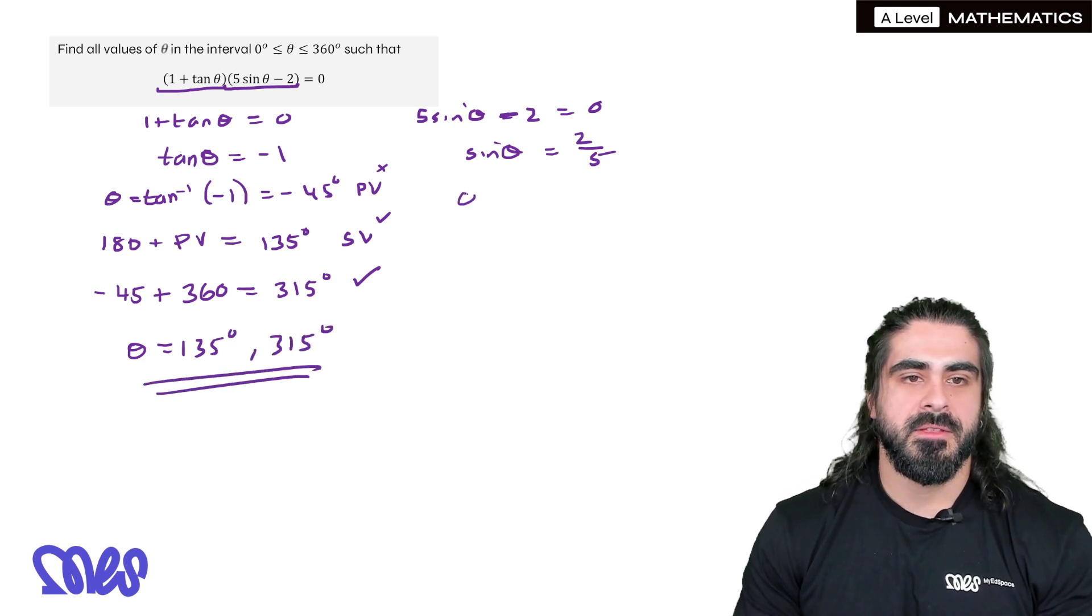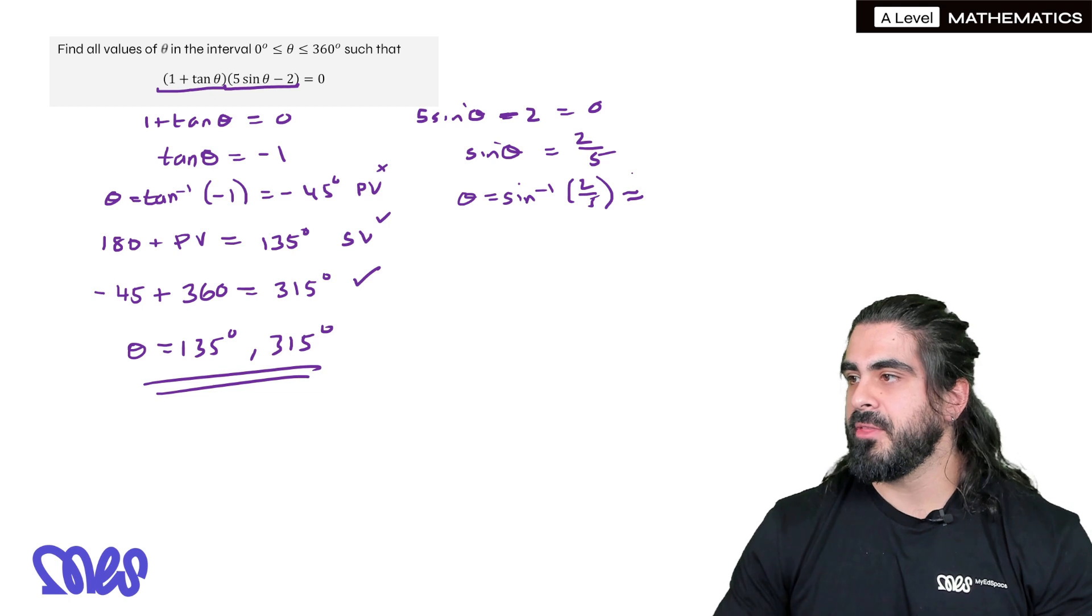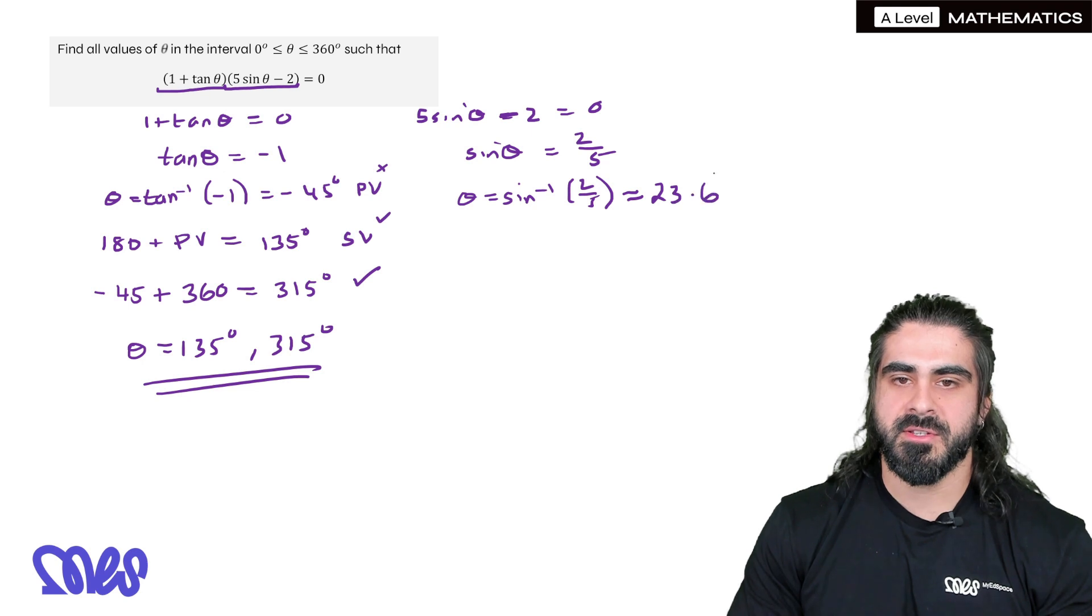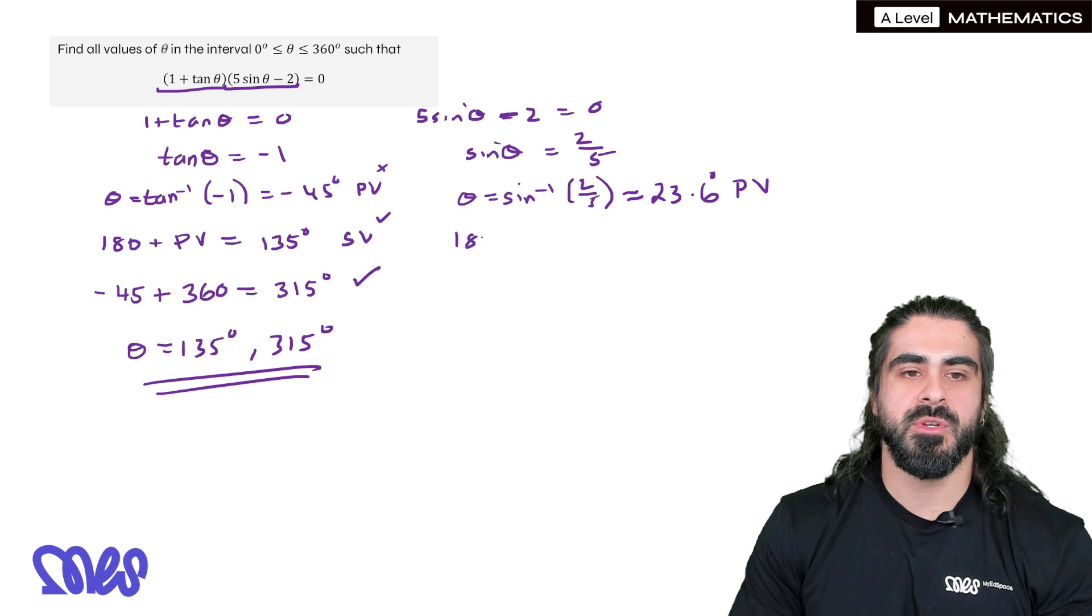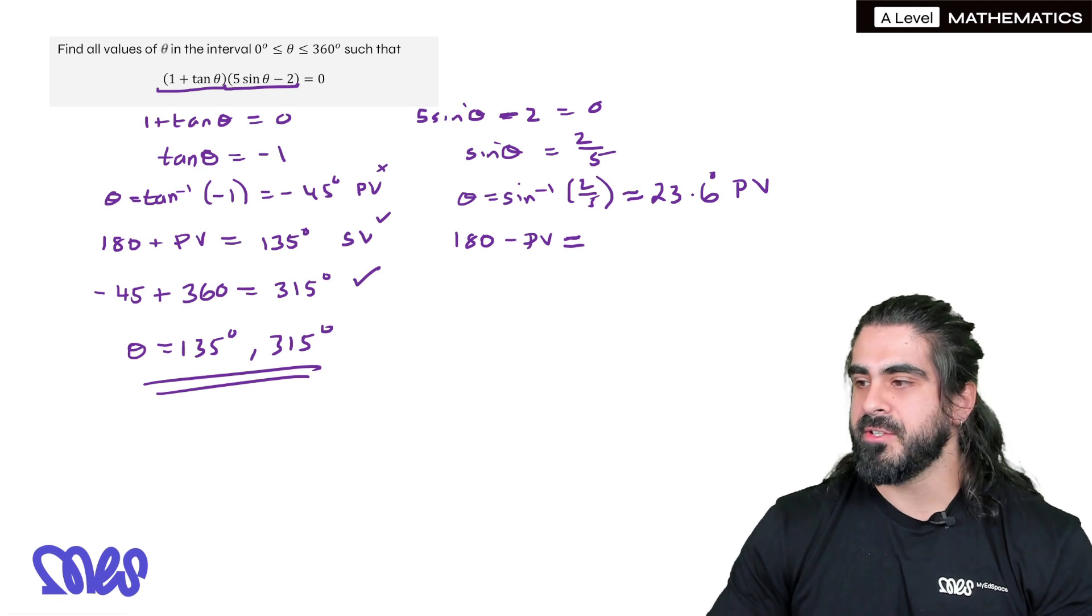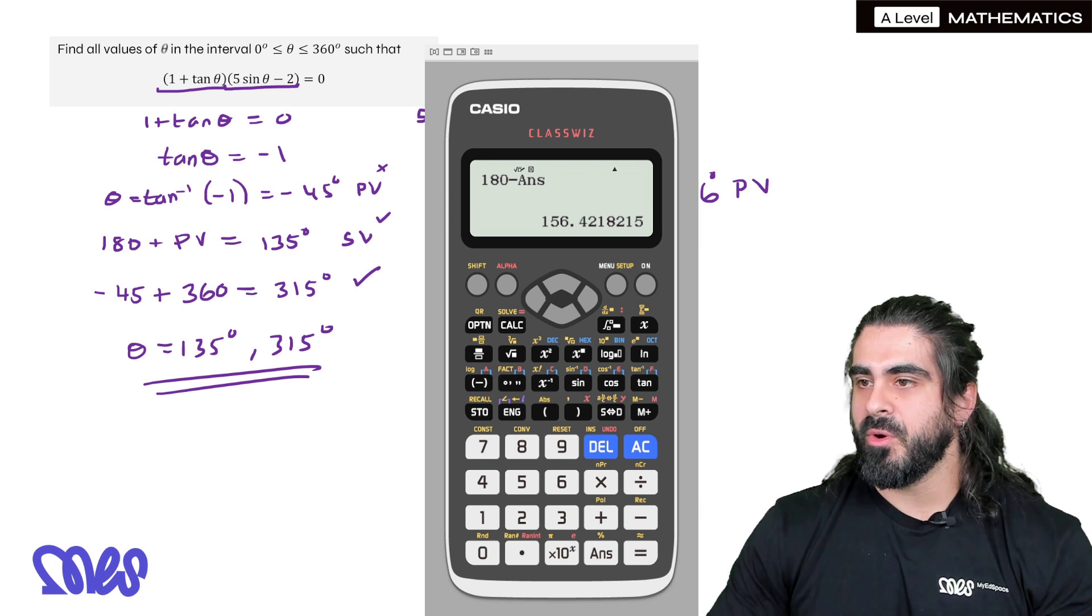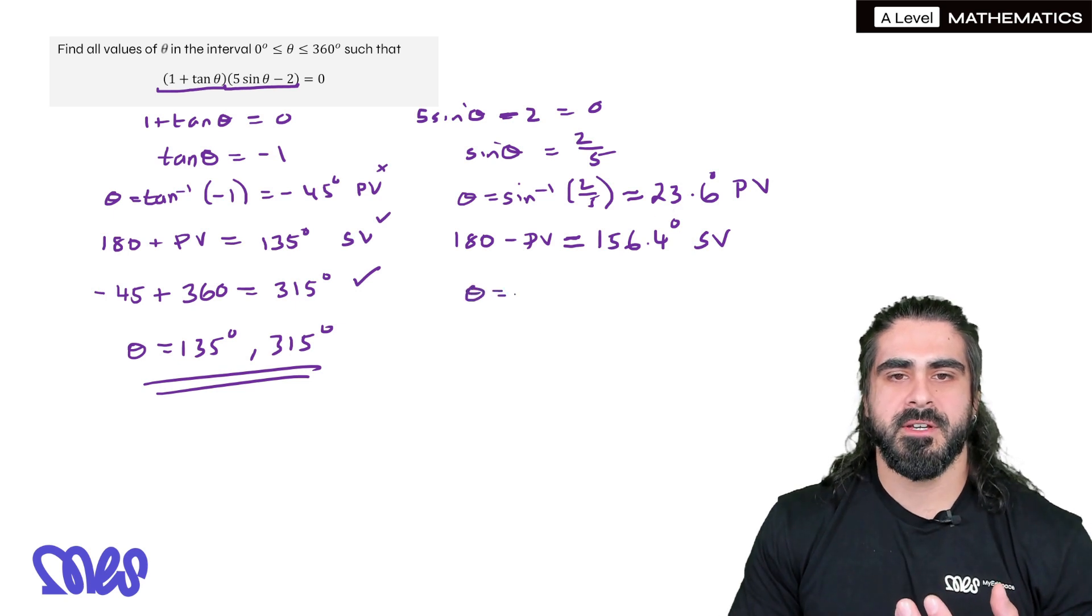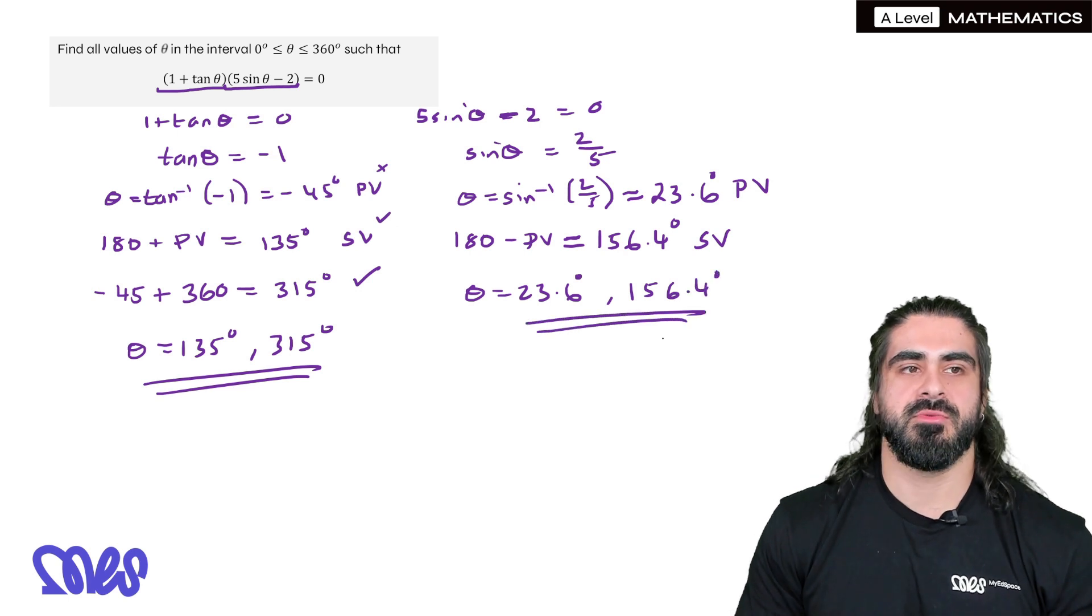All right, what about sine? Theta is inverse sine of 2 fifths. And I'm going to round that. I'm just going to say 23.6. That's our primary value. Now, how do you work out the secondary value for sine? We always do 180 minus the primary value. And I'll just say equals because we have rounded that number. So we can just do 180 minus the answer. So 156.4. And that's our secondary. And we can't do anything more than that. So our only two solutions here are these two. You can't add or minus 360.